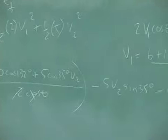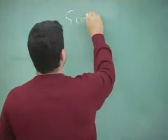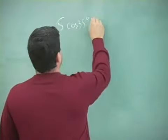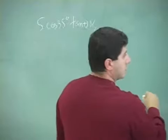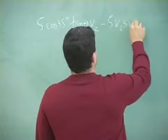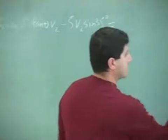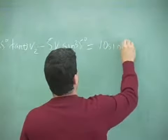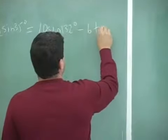So I'm going to end up with this: 5 cosine of 35 times tangent theta V2 minus 5 V2 sine of 35 is equal to 10 sine of 132. And then I'm going to take these to the other side.